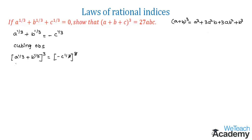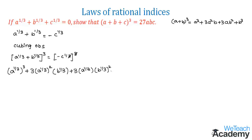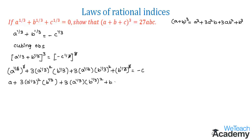Applying this formula, the first and last terms give a power 1 by 3 whole cube and b power 1 by 3 whole cube, where the cube and 1 by 3 cancel to give a and b respectively. The remaining middle terms give 3 into a power 1 by 3 whole square into b power 1 by 3 plus 3 into a power 1 by 3 into b power 1 by 3 whole square, and the right hand side becomes minus c.